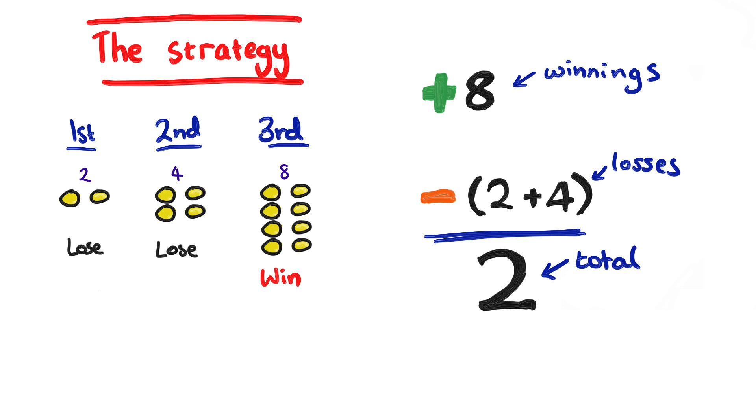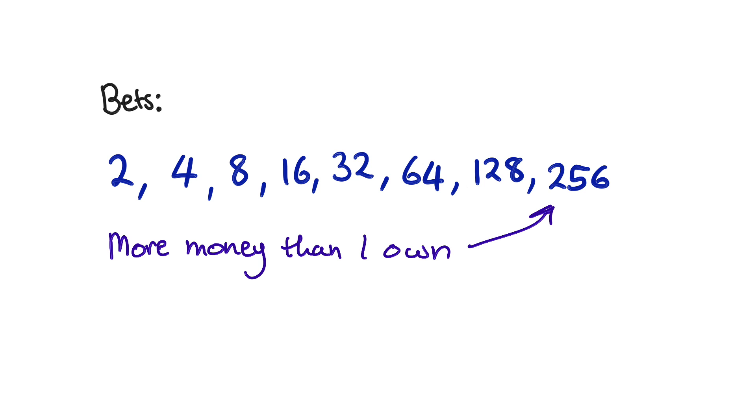You might say, yeah but the amounts of money you're betting every time get huge quickly. And that's true. But it's pretty unlikely that you'll even lose that many times in a row. I mean the probability that you'll lose just 3 rounds is only 1 in 8.